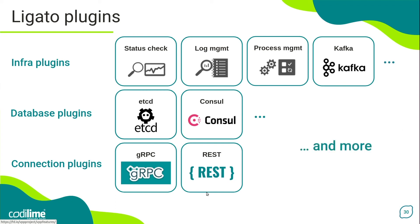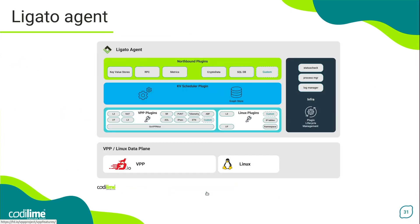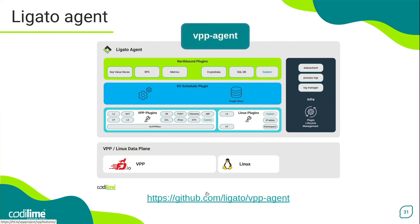These are just some examples of plugins Legato offers out of the box — there are more. Moreover, developers can create their own custom plugins because Legato is an open and extensible framework. Combining the functionalities provided by individual plugins into a larger whole allows you to create so-called software agents that manage and control underlying network functions. This is the essence of the Legato framework. It comes with a standard implementation of such an agent called the VPP agent — a kind of universal solution that controls the VPP data plane thanks to the wide range of plugins used, and thus offers a rich suite of network functions.